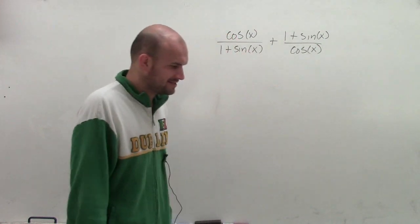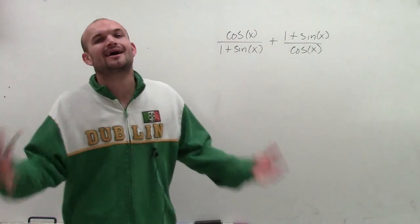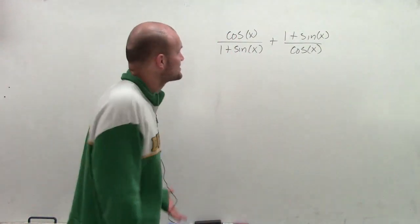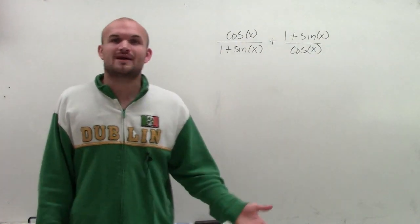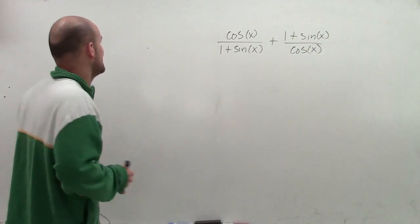So when looking at a problem like this, the main important thing is we see fractions. I hate fractions. I never want to deal with fractions. We just need to go back and think about easier fractions. How do we add fractions with unlike denominators?